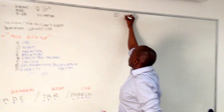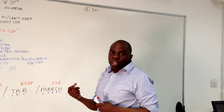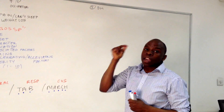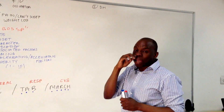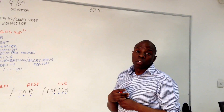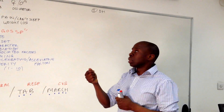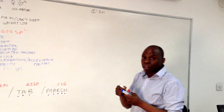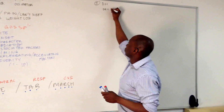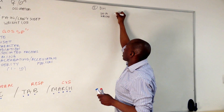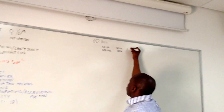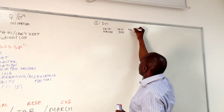We're on to number five now: DH, which is your drug history. What medications are they on at the moment? With elderly people, they'll often have a repeat prescription in their handbag. You can ask, 'Do you happen to have a repeat prescription or a list of your medication?' You can then copy the information down carefully. You should write down drug name, drug dose, and frequency of medication.